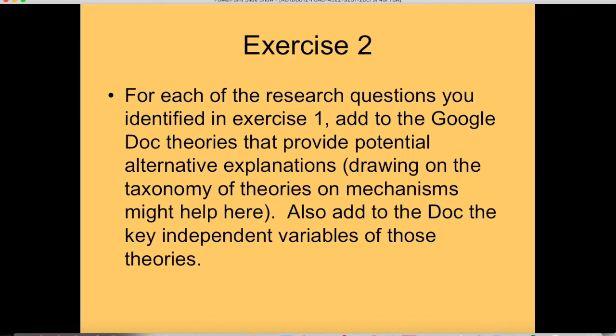For the second exercise on research design, take the questions you developed in the first exercise and ask yourself: what are some alternative explanations for the outcomes on that question? What are the variables involved in those alternative explanations? Write those into the Google Doc if you're taking a class, or puzzle through those questions on your own if you're going through the videos that way.